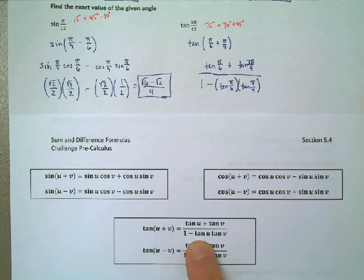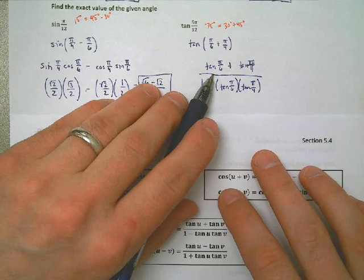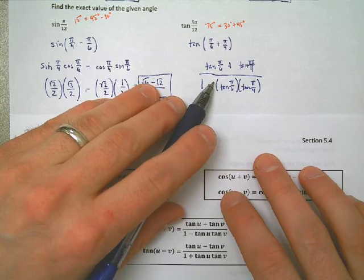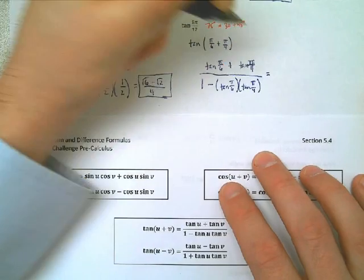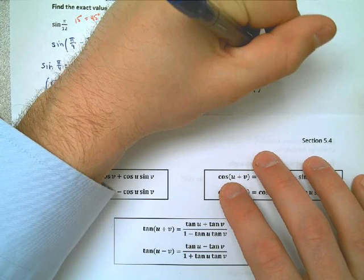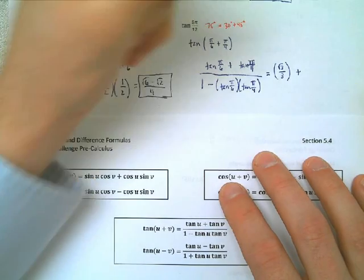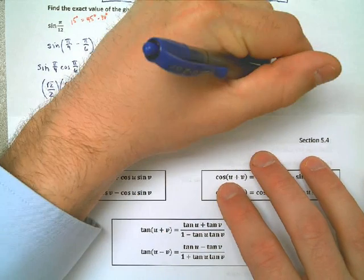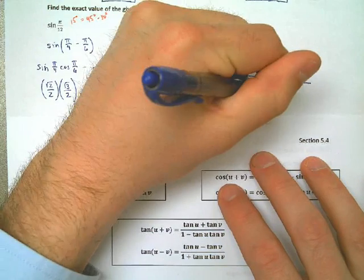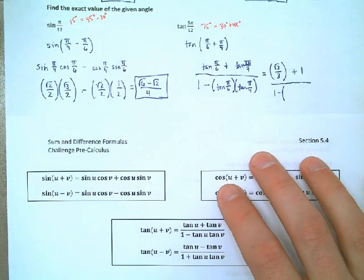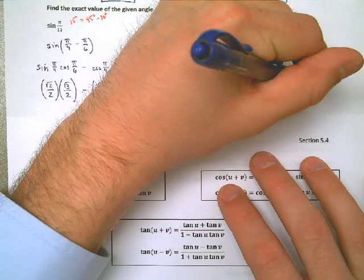All right, so this is what I need to evaluate. Now I need to go through and figure out what the tangent of π/6 is. Let's see, tangent of 30 is going to be 1/√3. If you need to draw a triangle out, do it. Tangent of π/4 is just 1, tangent of 45 degrees. On the bottom, I have 1 minus the tangent of π/6, once again, √3/3, and the tangent of π/4 is 1.